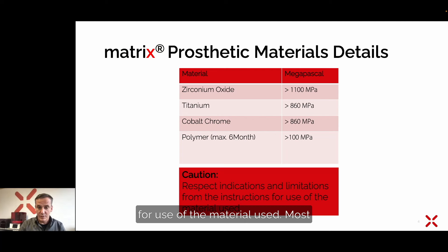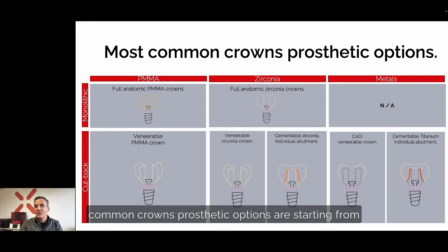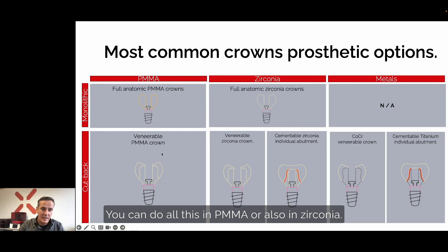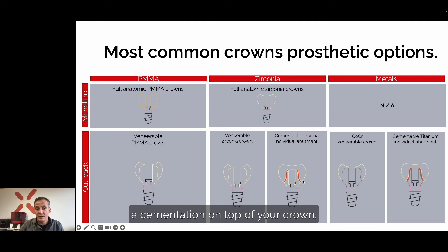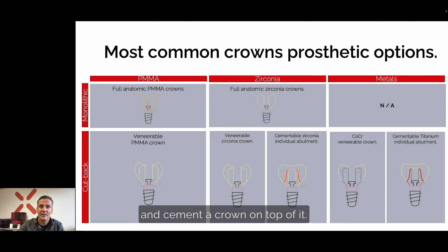The most common crown prosthetic options start from monolithic crowns or cutback techniques. You can do all of this in PMMA or in zirconia. In zirconia you are also able to do a cementation on top of your crown, especially when there is a strong angulation in aesthetic zones — it is still possible to do a mesostructure and cement a crown on top of it.